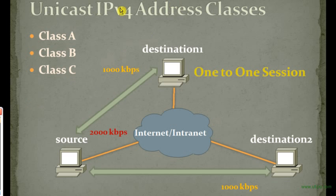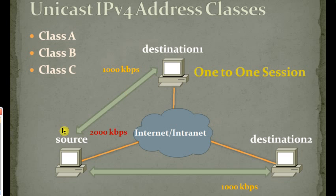For unicast IPv4 address classes, which are the first three classes — Class A, Class B, and Class C — imagine a source computer communicates with destination 1 and destination 2. It's a one-to-one model, so it must establish one-to-one sessions with every destination. The source machine establishes one session with destination 1 requiring 1000 kbps, and another session with destination 2 also requiring 1000 kbps. The source machine needs to replicate bandwidth for every session, resulting in 2000 kbps required in this example.